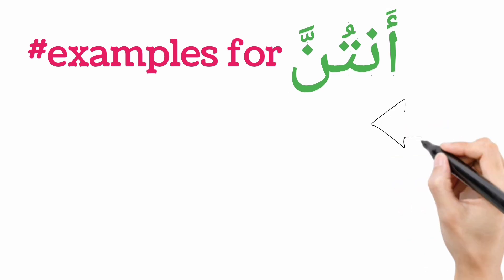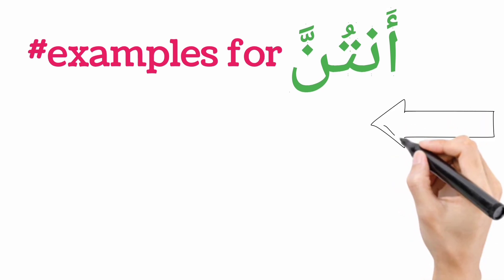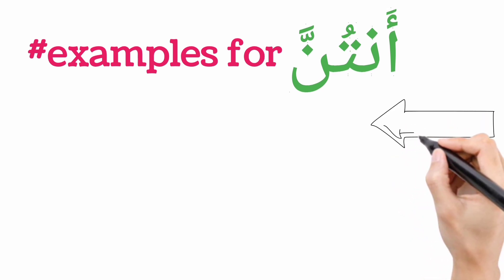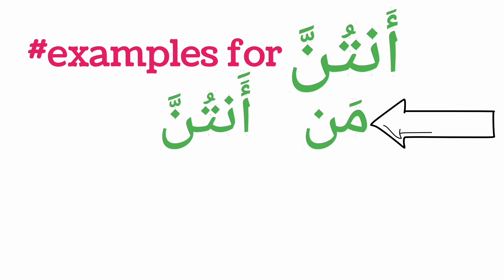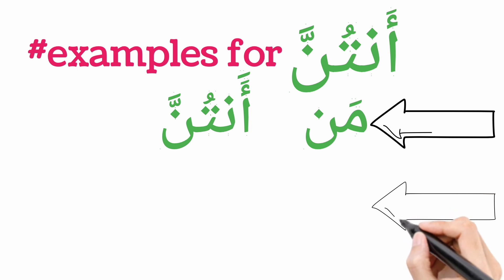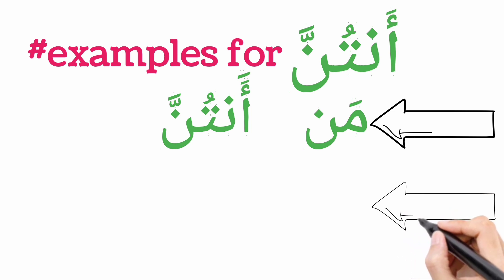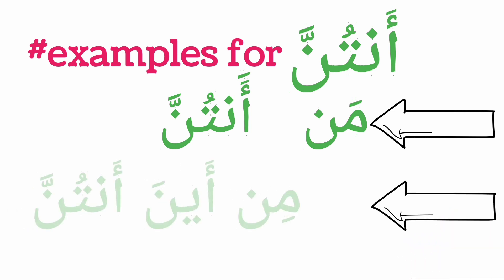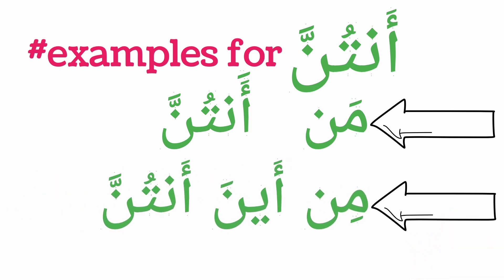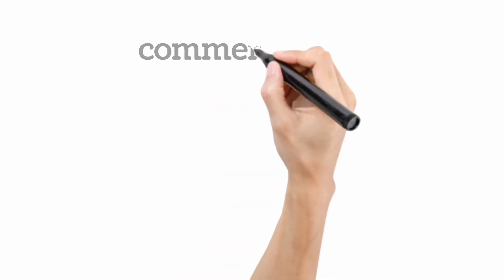For examples of antunna, which is the plural aspect of anti, we have 'man antunna' — meaning 'who are you?' — when referring to a group of more than two females. We also have 'aina antunna,' meaning 'where are you all?'